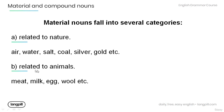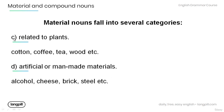B: related to animals — meat, milk, egg, wool, etc. C: related to plants — cotton, coffee, tea, wood, etc. D: artificial or man-made materials such as alcohol, cheese, brick, steel, etc.